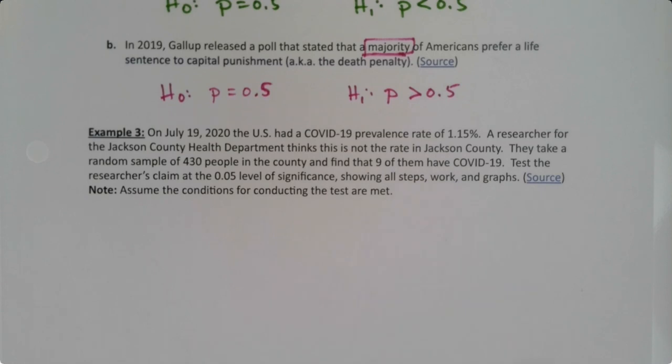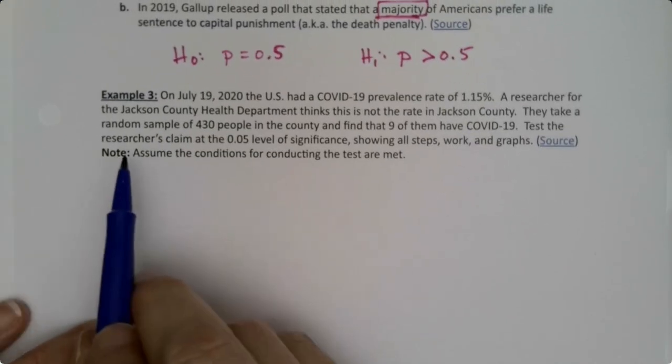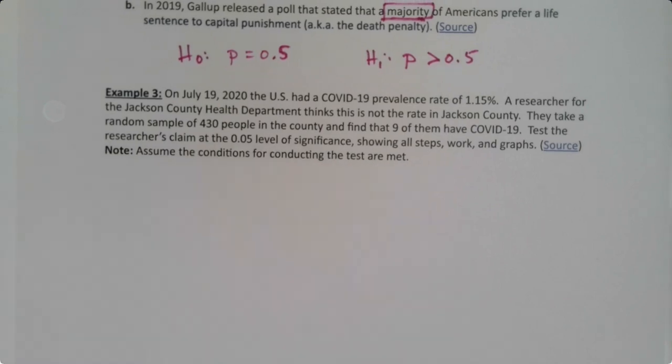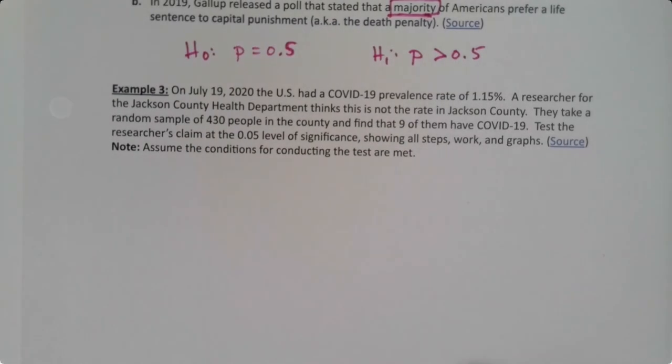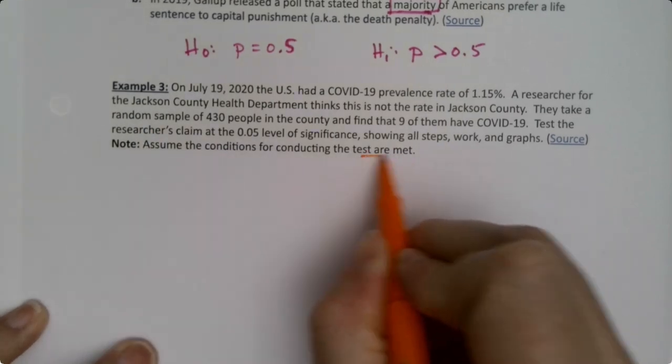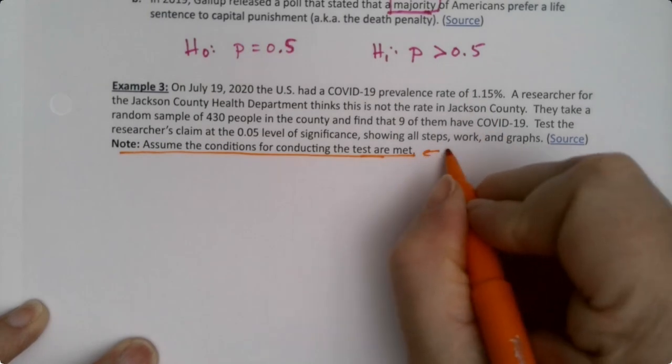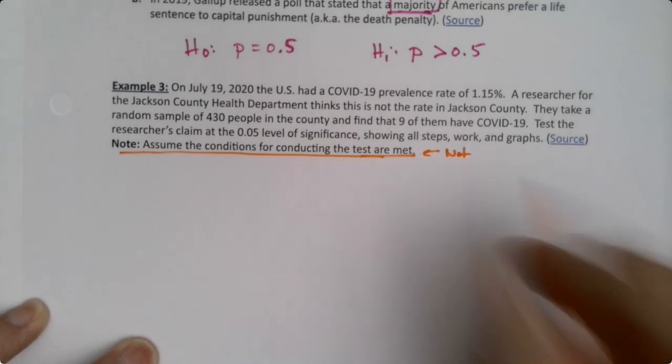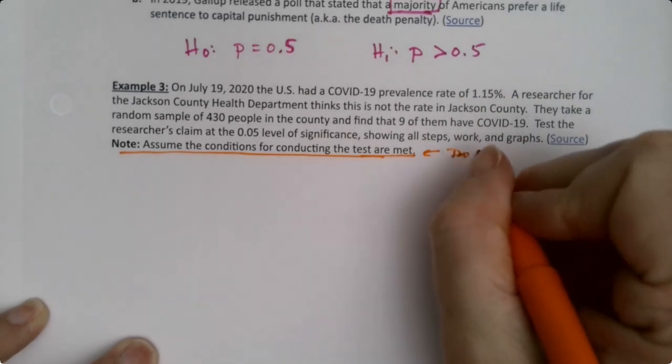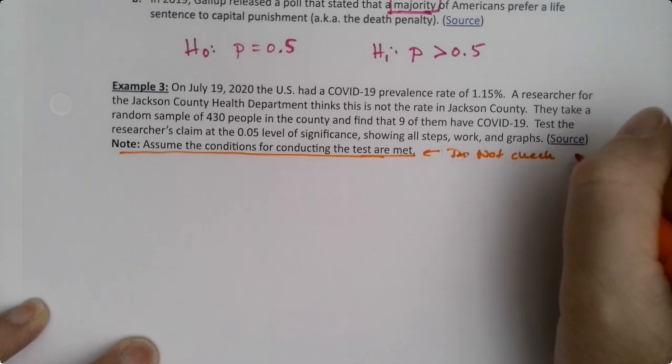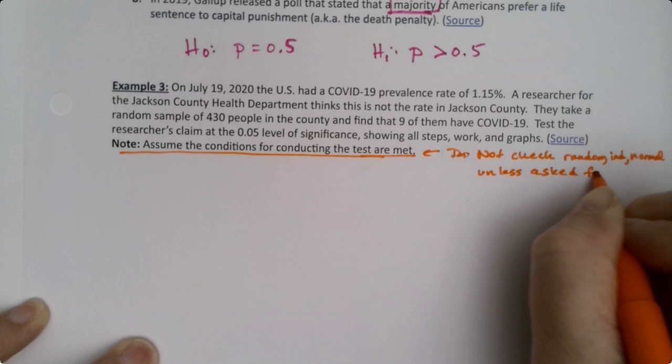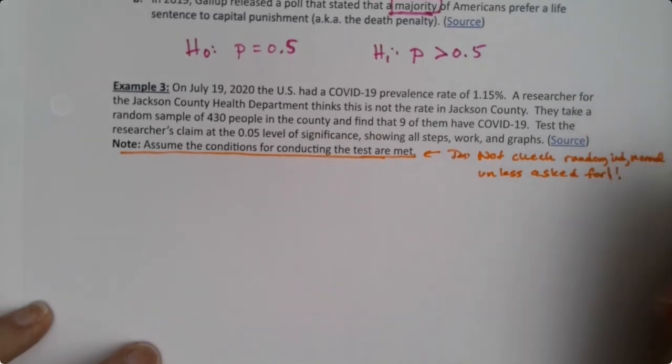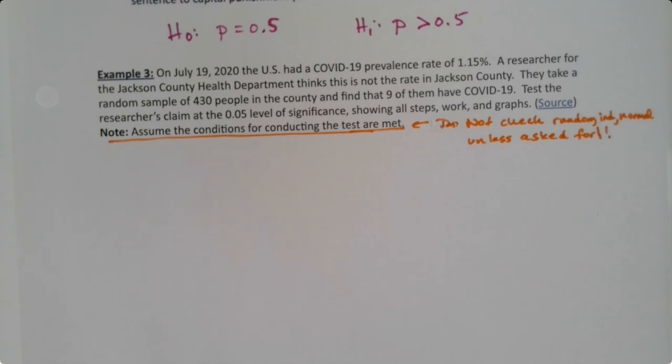Now what I will notice is you don't have to do the whole requirements thing. You only do the requirements thing if it's asked for. This random, independent, normal thing—we don't have to do it. Even if I didn't say so, we just assume we don't. Do not check random, independent, normal unless asked for. You only do it when it's asked for in a problem, and it was not asked for, so we are not going to do it. That's less work for us.